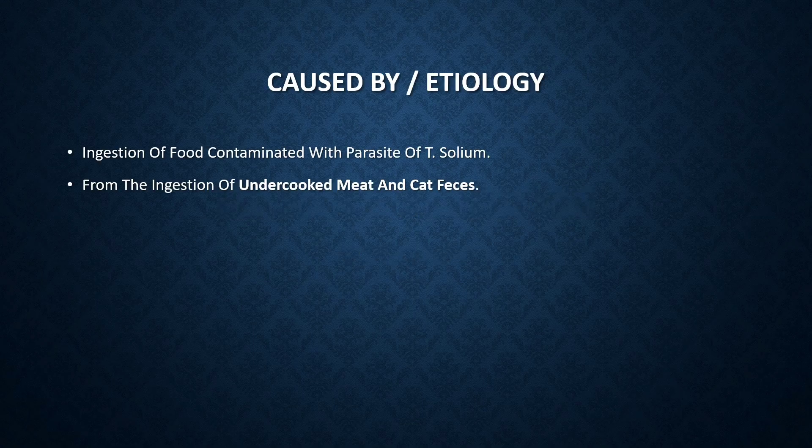Neurocysticercosis is caused by ingestion of food contaminated with the parasite Taenia Solium. It is seen in undercooked meat or catfish. So, neurocysticercosis is caused by ingestion of undercooked meat or catfish.